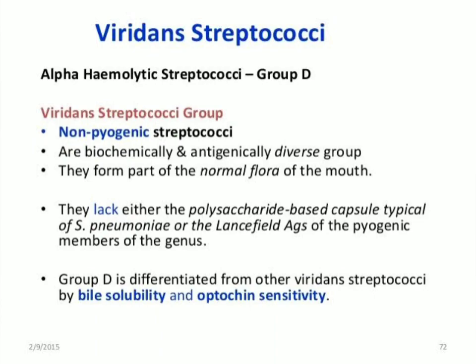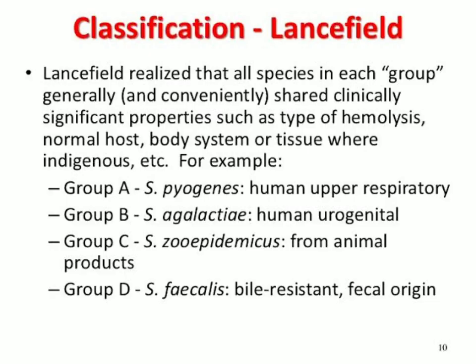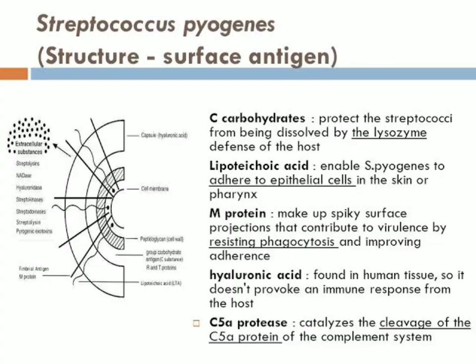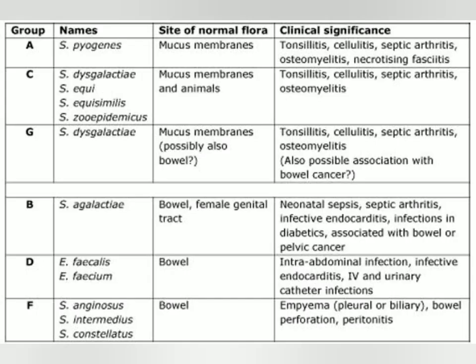Beta hemolytic streptococci produce a sharply defined, clear, colorless zone of hemolysis. More pathogenic streptococci belong to this group. Beta hemolytic streptococci were classified by Lancefield into 20 Lancefield groups based on the nature of a carbohydrate C antigen on the cell wall. The groups are named from A to V without I and J. Most streptococci that produce human infections belong to Group A and are known as Streptococcus pyogenes.